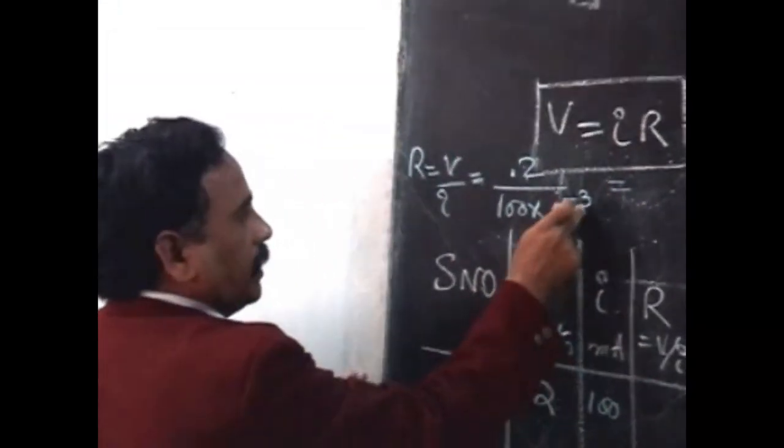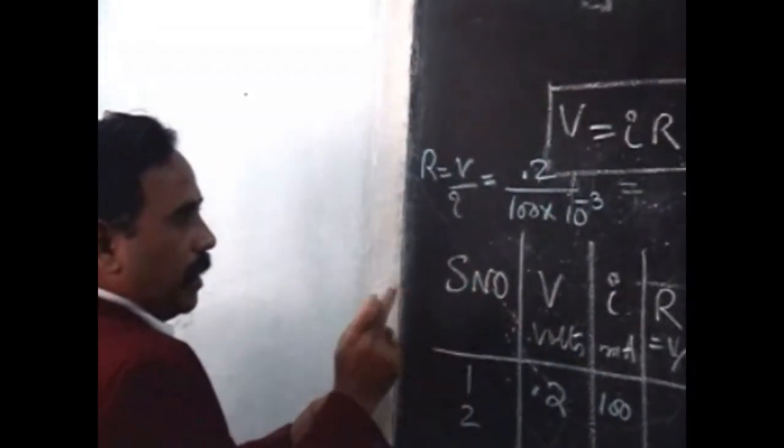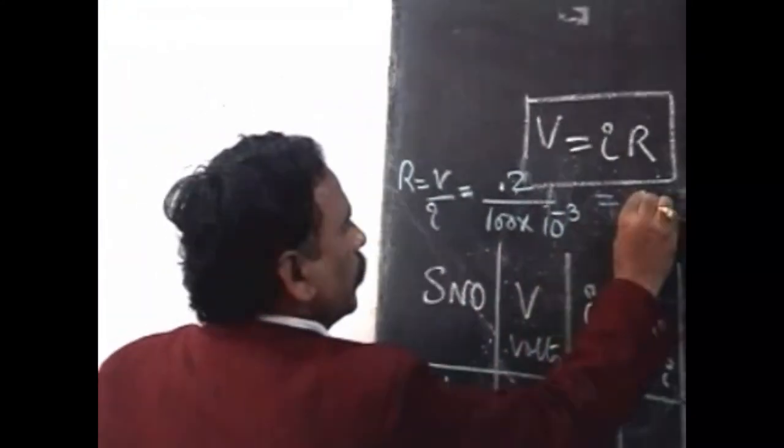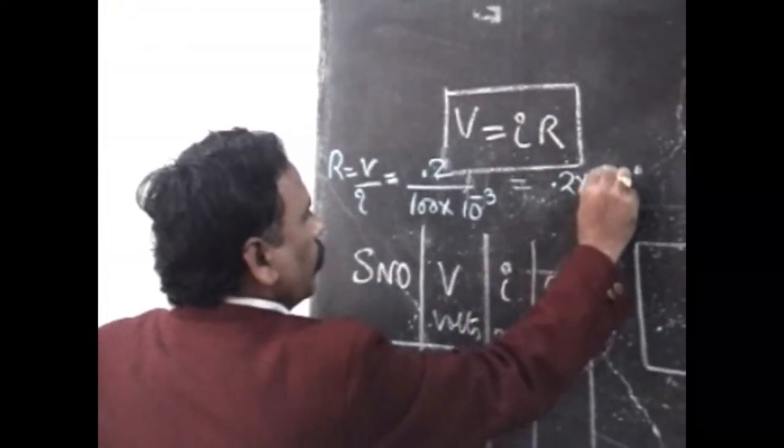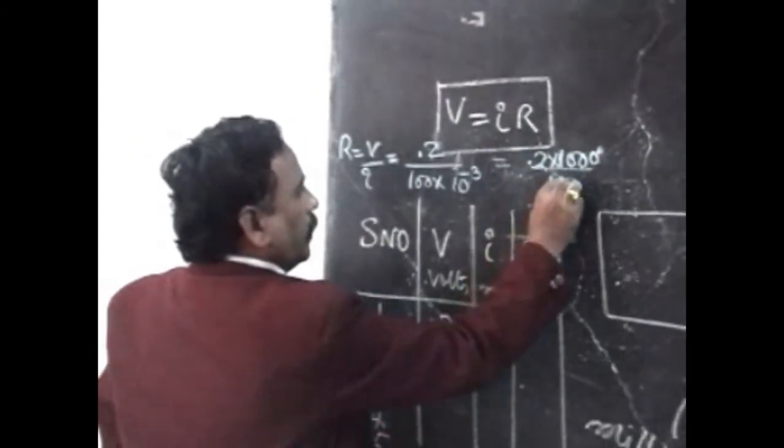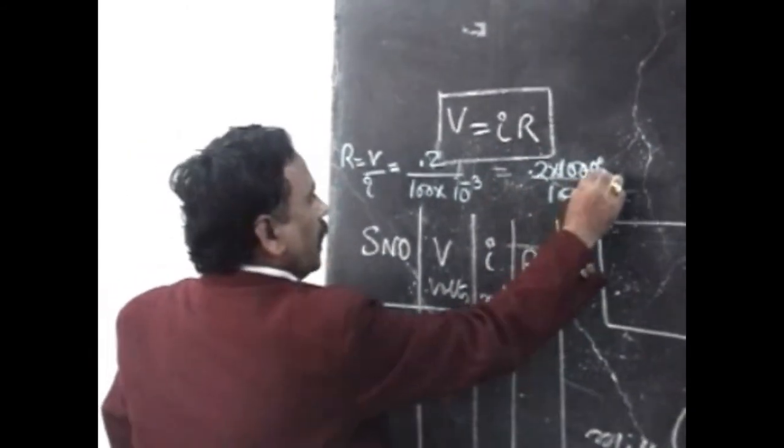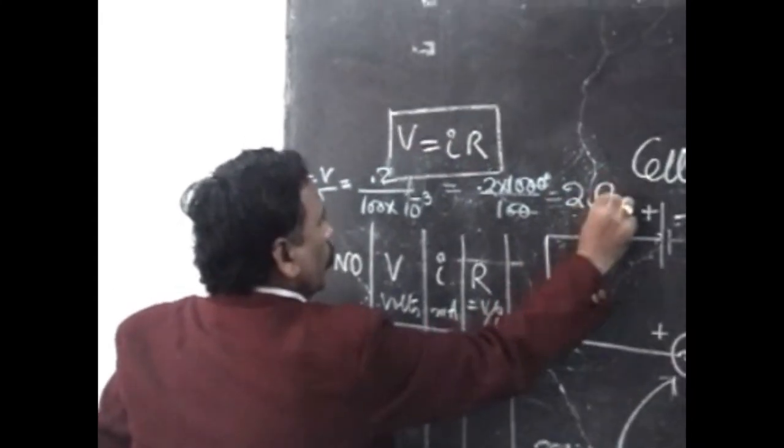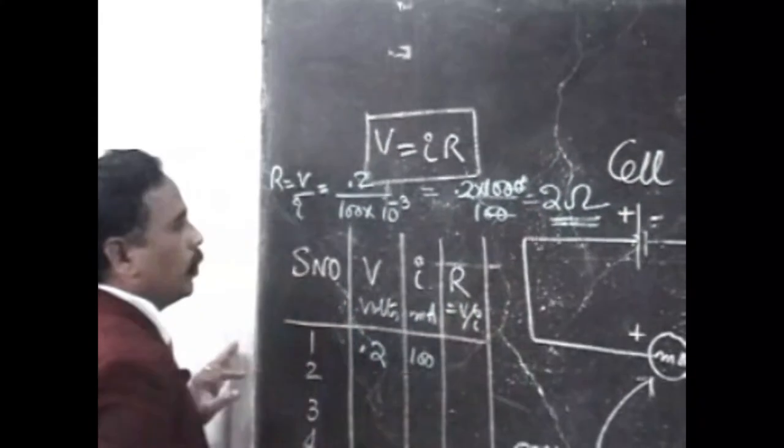So now, if 10 to the power minus 3 goes to the numerator, it becomes 10³, and in the denominator it is 100, therefore these two zeros will be cancelled. And finally, we can write the answer as 2 ohms.